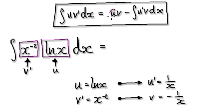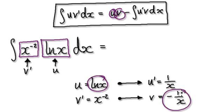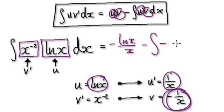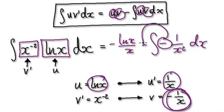So now blindly follow the instruction here. It's saying get u times v. So this here would be negative natural log of x over x. Take away the integral of — it's saying get u prime times v. So u prime times v would be negative 1 over x squared dx.